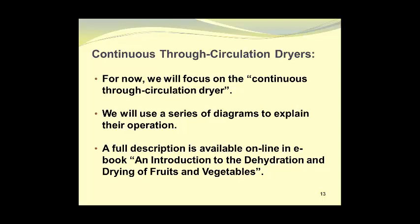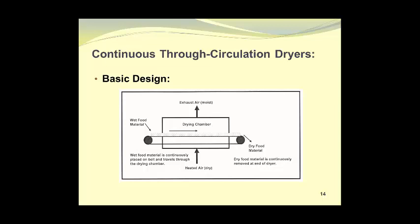A full description is available online in an e-book titled An Introduction to the Dehydration and Drying of Fruits and Vegetables. Here you see the basic design of a continuous through-circulation dryer. Wet material is fed onto a conveyor belt at the left side of the diagram. It is then passed through the drying chamber where heated air removes the moisture. The dry material is then discharged from the conveyor belt at the right-hand side of the diagram.